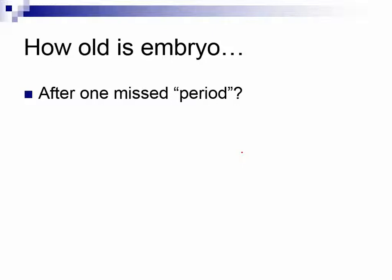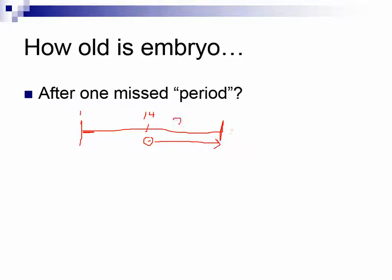Now let's think: if a woman has missed her period, how old is the embryo? She has about a 28-day cycle. Menses starts on day one; ovulation happens on day 14 in a textbook woman. If sperm fertilize the egg right away and the corpus luteum self-destructs after two weeks, most people say the embryo is two weeks old when the period is missed — but think about it more carefully.